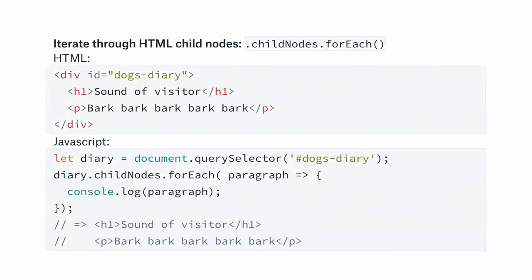If you want to iterate through HTML nodes, there's also a useful property called childNodes. If you use querySelector to get an element by ID, you can get its childNodes and call forEach on it. For example, if the element has a heading and a paragraph tag, iterating through childNodes will give you exactly those elements.